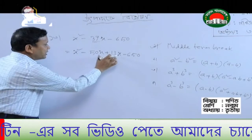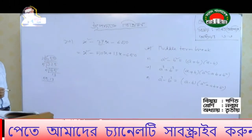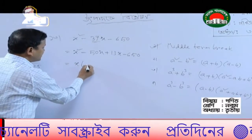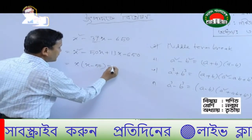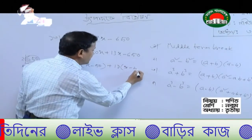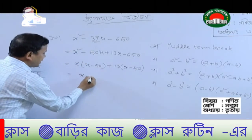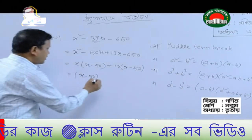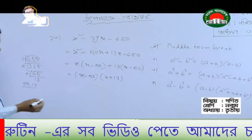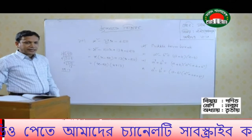Minus 60. Taking common from the first two terms: x, x minus 50. Plus 13 — taking common gives x minus 50. Then from the second part: x minus 50 and x plus 30. So the factorization is: (x minus 50)(x plus 30). That is our middle term break. Is that right? Good — now everyone write it down.